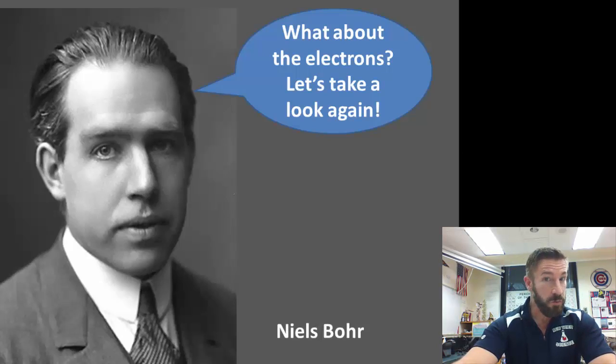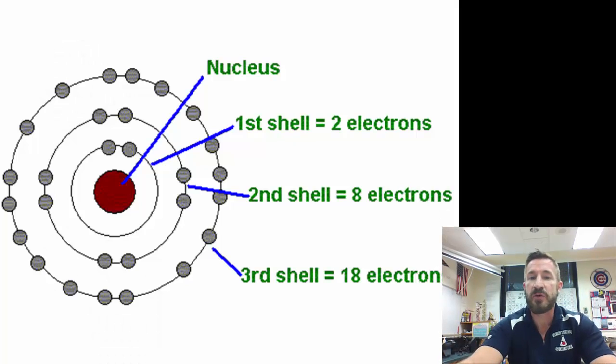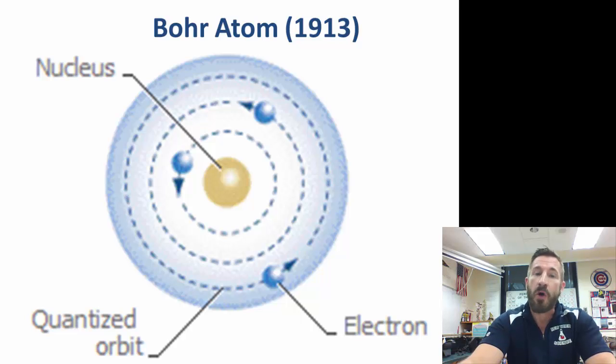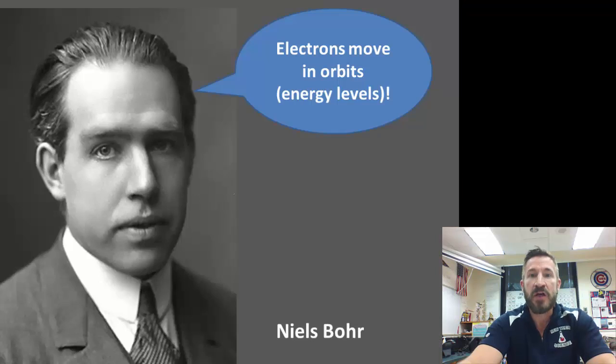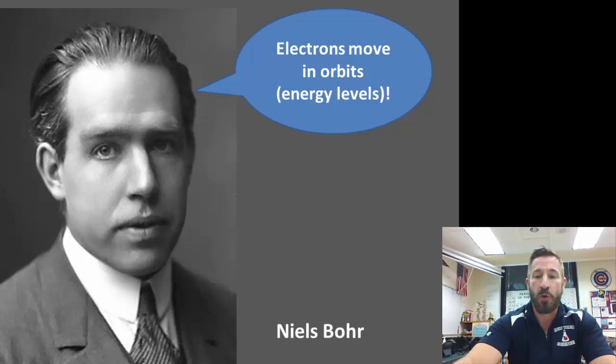Next, Niels Bohr said, what about the electrons? Let's take a look at those again. Niels Bohr studied electrons. He put electrons in shells. He said the first shell had 2 electrons, the second shell had 8 electrons, the third shell had 18 electrons, and that's what Bohr is attributed with. Bohr in 1913 had a more organized orbit or place to find those electrons. He said electrons moved in orbits or energy levels.